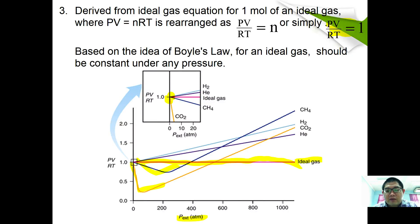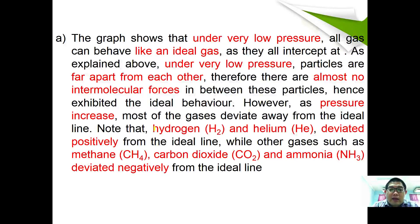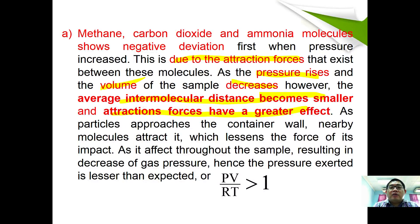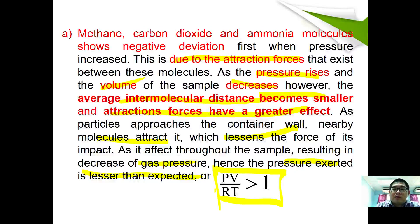As pressure increases, some gases deviate from the ideal line. Hydrogen and helium deviate positively, while methane, carbon dioxide, and ammonia deviate negatively. Negative deviation occurs due to attraction forces between molecules. As pressure rises, intermolecular distance decreases, attraction forces become greater, nearby molecules attract each other reducing the force of impact on the container wall, so pressure exerted is less than expected — pV/RT is less than 1.